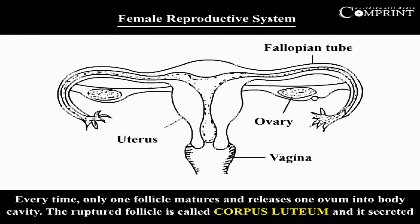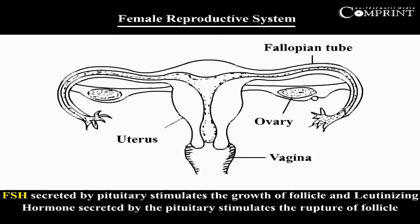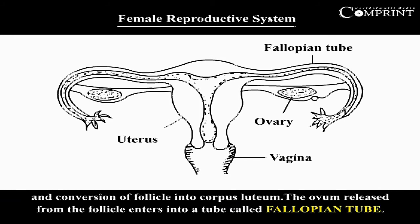The ruptured follicle is called corpus luteum and it secretes the female sex hormones oestrogen and progesterone. A hormone secreted by the pituitary stimulates the rupture of the follicle and conversion of the follicle into corpus luteum.